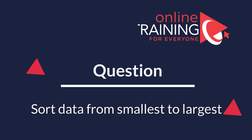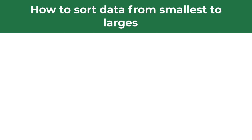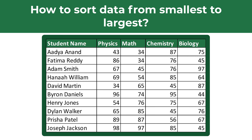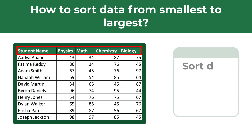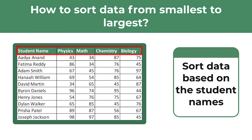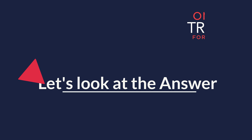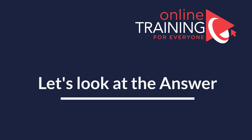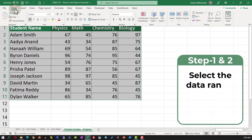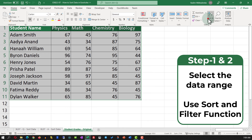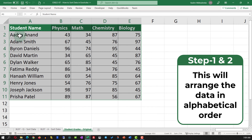A lot of times you might get a question on how to sort data in Excel from smallest to largest. For example, you might be presented with a data set showing student names and their grades in physics, math, chemistry, and biology, and you need to sort this data set based on student names. To accomplish this, select the data set, go to the Home tab, navigate to Sort & Filter, and select Sort A to Z. This will rearrange the data in alphabetical order based on the student name.